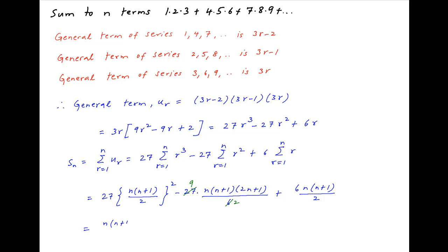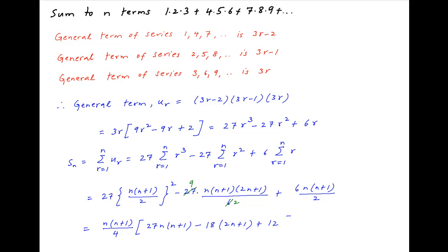Now take n(n+1)/4 as a common factor. Inside the brackets we are left with 27 times n(n+1) minus 18 times (2n+1) plus 12. Then take 3 common outside the brackets.